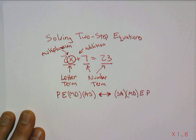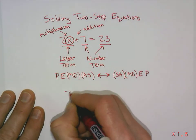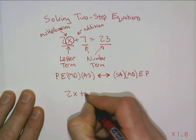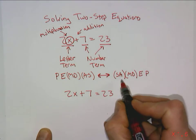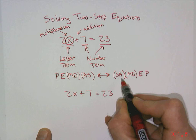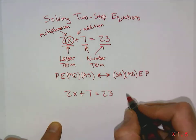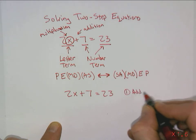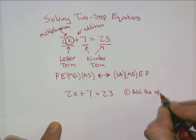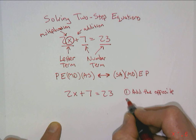Now the procedure that we would follow to do this, we write the equation down here, 2x plus 7 equals 23, is we would again look here to our order of operations backwards. Is there addition or subtraction in this problem? Yes there is, there's addition. And so what we would do is undo that first.